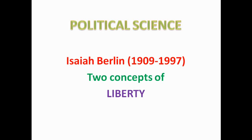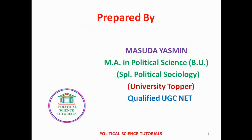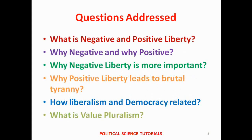Welcome to the channel of political science tutorials. In this video we will try to understand Berlin's two concepts of liberty. The concept of liberty has been widely discussed by modern political philosophers, but Berlin is famous for his two concepts of liberty — negative liberty and positive liberty. We will address what these are, why negative liberty is more important, why Berlin said positive liberty leads to brutal tyranny, how liberalism and democracy are related, and what value pluralism is according to Berlin.